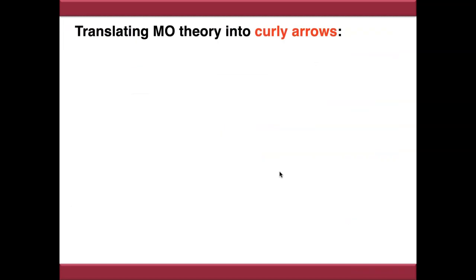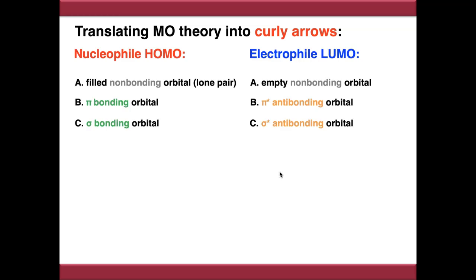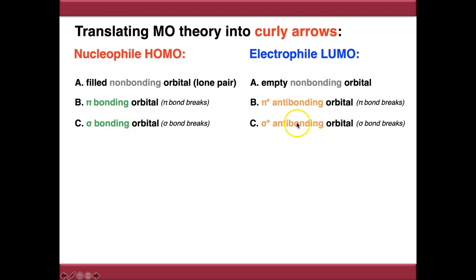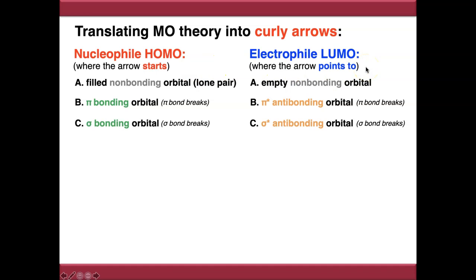These MO diagrams translate into curly arrows, because you don't want to draw a full MO diagram for every mechanism. Your HOMO on the nucleophile is where your curly arrow starts — that's where the electrons come from. Your LUMO is where the arrow points to. This is how molecular orbital theory helps us understand why curly arrows look the way they do. In the examples that follow, the nucleophile is always on the left, but in real mechanisms you'll need to predict that yourself.